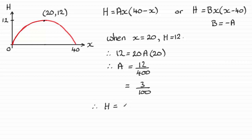So what we end up with for the equation for h, or one possible equation, is h equals 3 over 100 x times 40 minus x. Or if you did this version, you would have h equals minus 3 over 100 times x times x minus 40. Check it out, OK, if you're unsure how I got that. Just by substituting these values in, you'll find that the constant b is minus 3 hundredths.